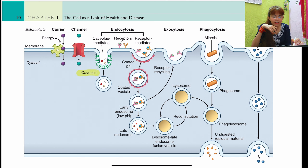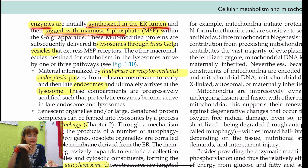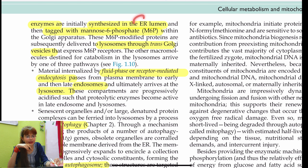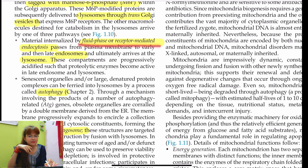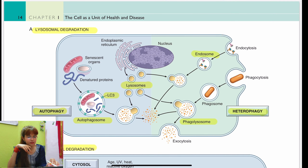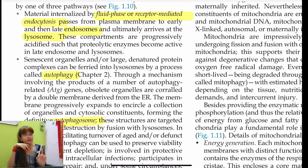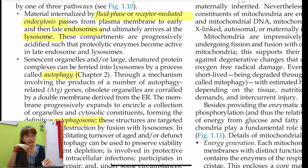Regarding waste disposal mechanisms — lysosomes and proteasomes. Lysosomes contain proteases, nucleases, lipases, glycosidases, phosphatases, and sulfatases. These enzymes are synthesized in the ER lumen, tagged with mannose-6-phosphate, and delivered to lysosomes through trans-Golgi vesicles. Lysosomes function via three mechanisms: fluid-phase or receptor-mediated endocytosis, autophagy, and phagocytosis — the latter forming a phagosome that ultimately fuses with the lysosome.